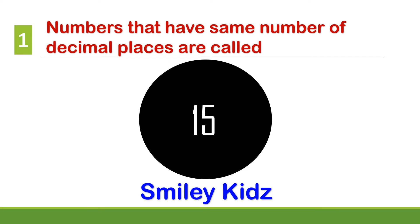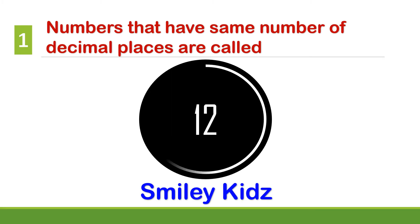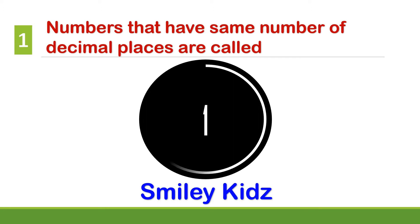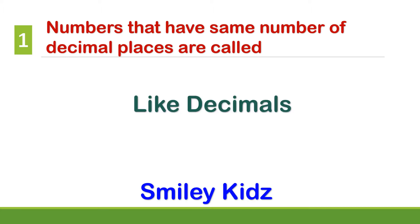Question number 1. Numbers that have same number of decimal places are called? Your time starts now. Your time is up. The correct answer is like decimals. Numbers that have same number of decimal places are called like decimals.